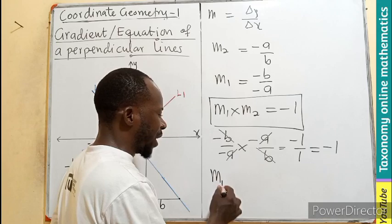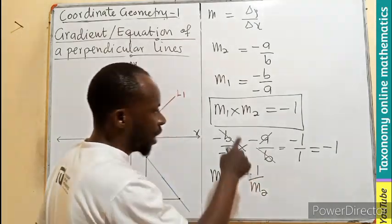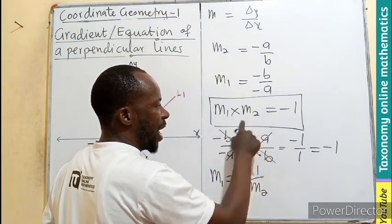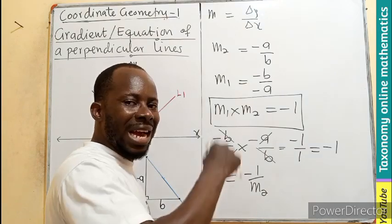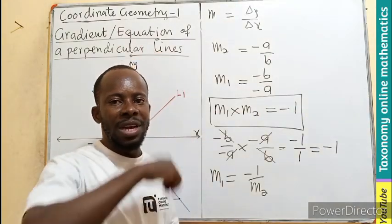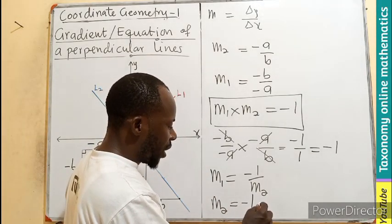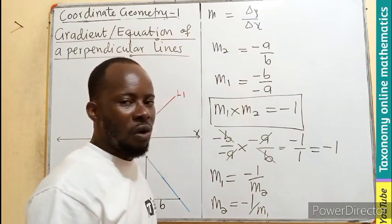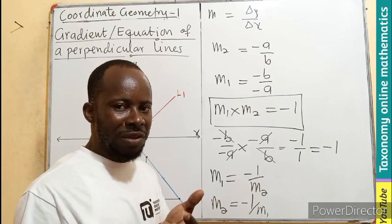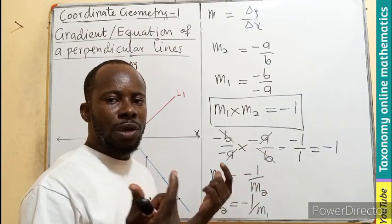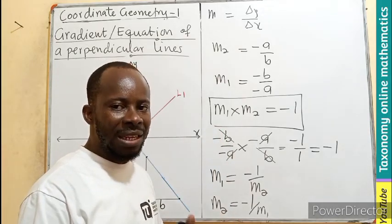So, therefore, if I want to find gradient 1, it will be negative 1 over gradient 2. That is divided by M2. If I divide by M2, it will be having this. So, it means that gradient 1 equals to the negative reciprocal of the gradient 2. In the same way, the gradient 2 will also be equal to negative reciprocal of gradient 1. If this is true. I am sure now you are convinced and know why the gradient of, the product of two perpendicular lines, their gradient, give us a negative 1.